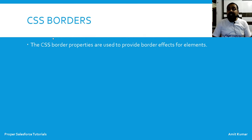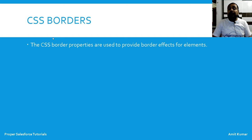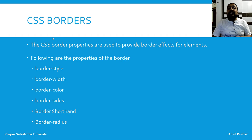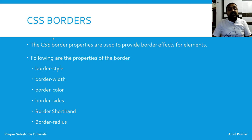CSS border properties are used to provide border effects for elements. The following are the properties of the border: border-style, border-width, border-color, border-size, border shorthand version, and border-radius.